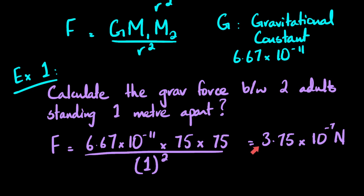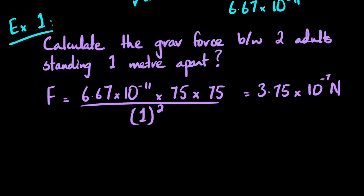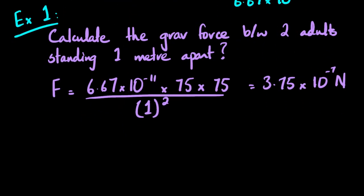So that's 0.375 micronewtons — clearly this force is far too small to be observed. However, this force becomes much more observable when talking about very large bodies, like celestial bodies such as stars and planets. That's what our second example will be.